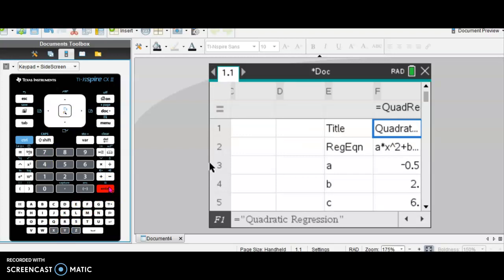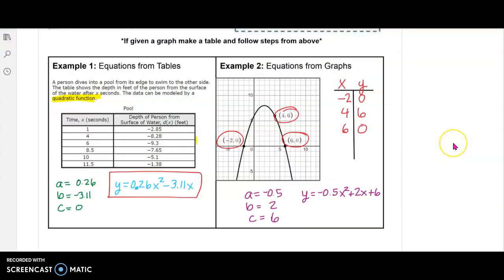And identify your A, B, and C. Write them down, and then write your function. You can see that I have the A, B, and C written down, and I have already plugged them into the function. So this is the correct answer.